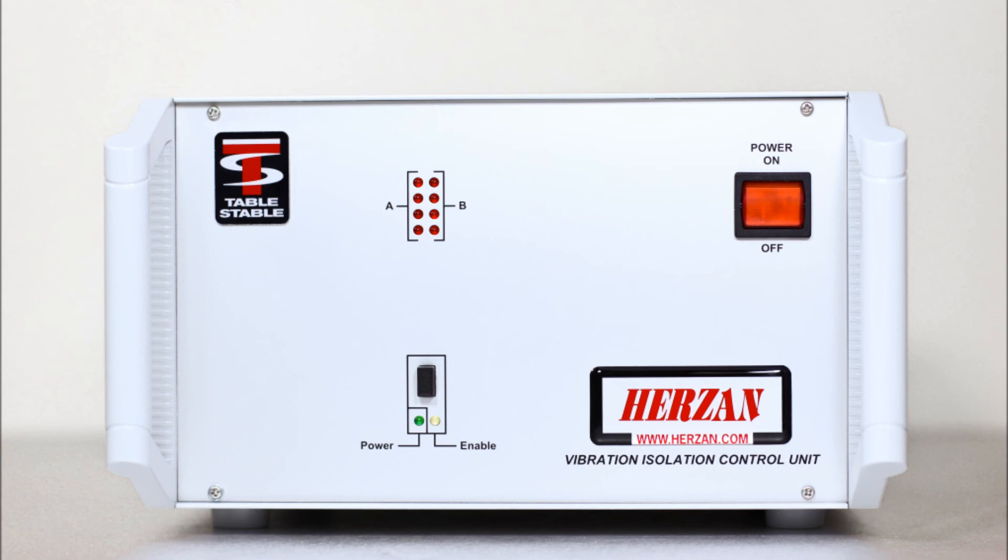After 30 seconds of powering on the AVI controller, press the black button to enable the active isolation component of the AVI platform. The yellow indicator light will now stay permanently on, indicating the AVI platform is actively isolating.